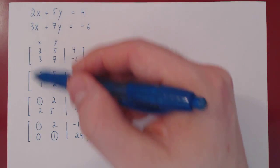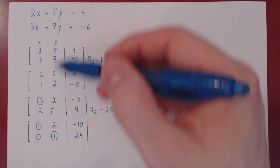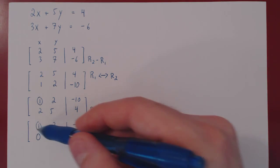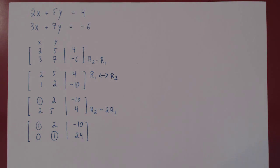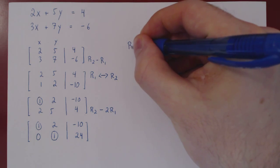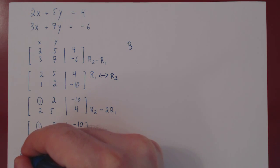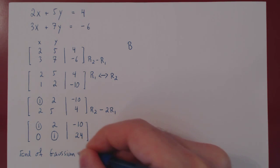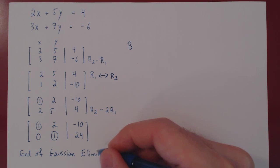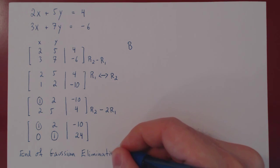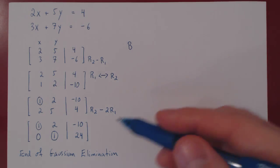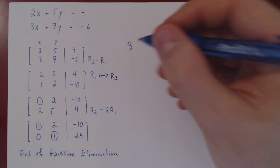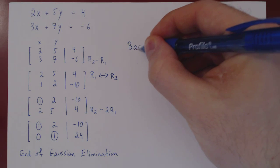Both variables x and y have a leading one. Since both variables are leading, we will have a unique solution. Every time all the variables have a leading one — therefore all leading variables — we always use backward substitution. That's the second step, and this is the end of what's called Gaussian elimination. Because both variables are leading variables, we will have a unique solution, and the most efficient way of getting to that unique solution is with the help of backward substitution.